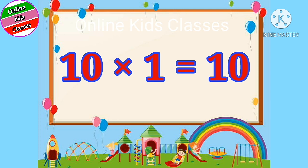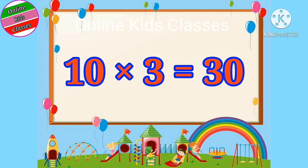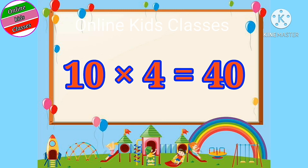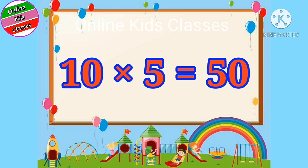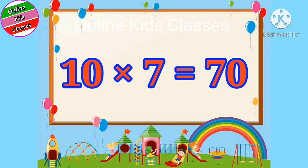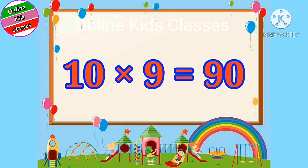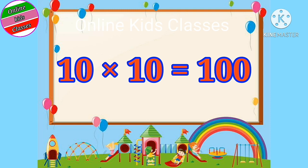Ten ones are ten. Ten twos are twenty. Ten threes are thirty. Ten fours are forty. Ten fives are fifty. Ten sixes are sixty. Ten sevens are seventy. Ten eights are eighty. Ten nines are ninety. Ten tens are one hundred.